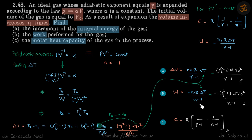And third is molar heat capacity, which we have already derived, so we'll just put the value of n as minus one and we can get our answer. Now for these two parts, we need delta t.